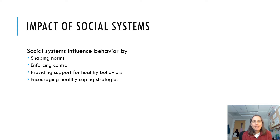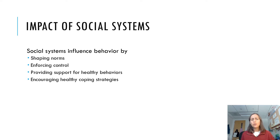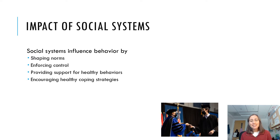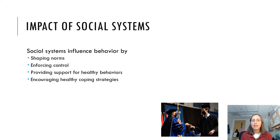Our social systems are going to influence behavior in several ways. One is that they shape norms — what's the expected way to behave in any given situation? What are the things we just do because of who we are? For example, here at Stout, we wear masks and that's just what we do. Interestingly, we also enforce that. It's a rule here at Stout that you have to wear a mask while on campus currently, and there can be sanctions and disciplinary consequences if you don't comply with that mandate.